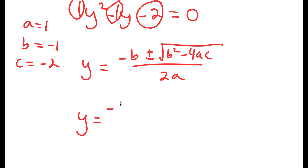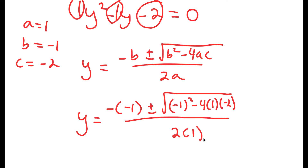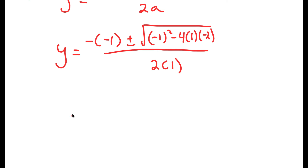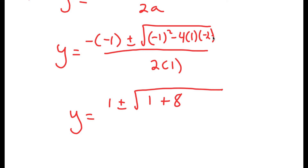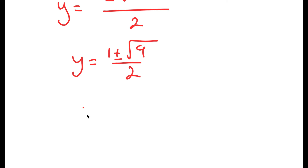So I get y equals negative of negative 1, plus or minus the square root of negative 1 squared minus 4 times 1 times negative 2, all over 2 times 1. That gives y equals 1 plus or minus the square root of 1 plus 8 over 2, because negative 4 times negative 2 is positive 8. The square root of 9 is equal to 3, so I get y equals 1 plus or minus 3 over 2.